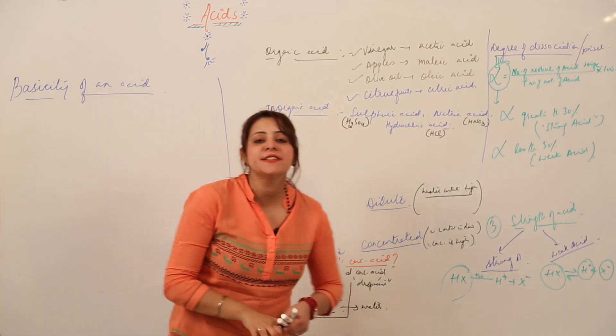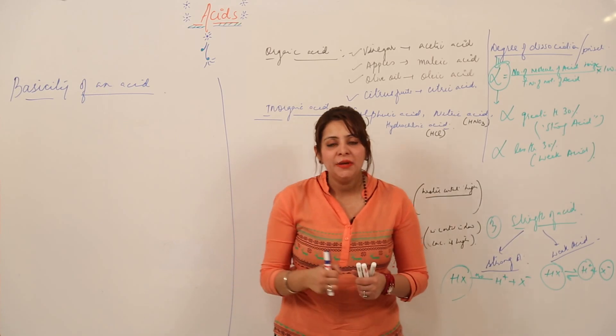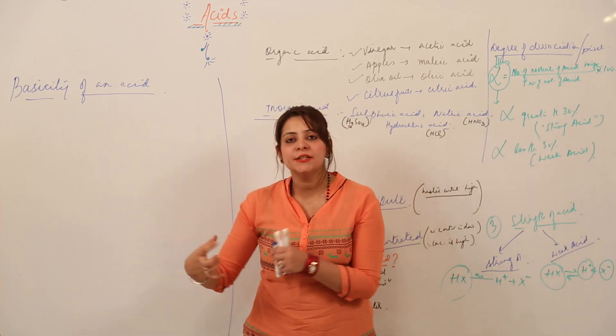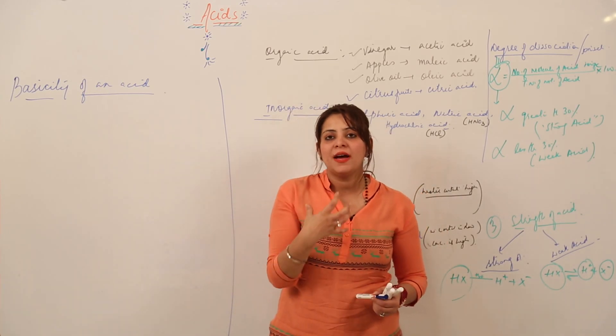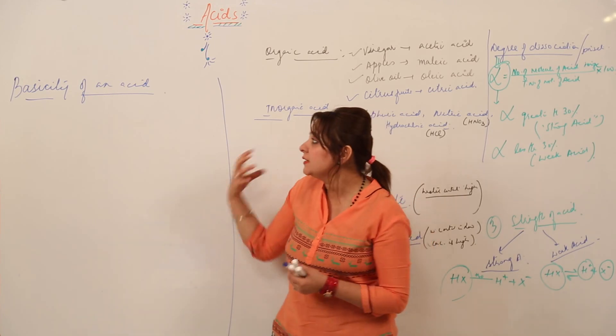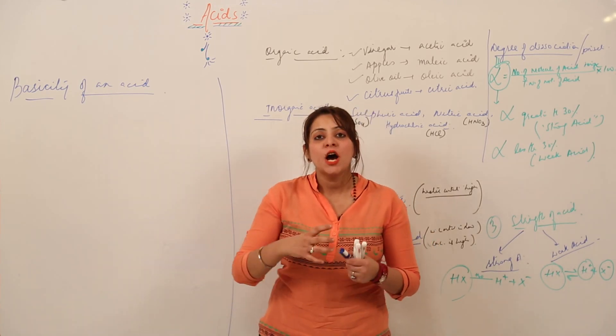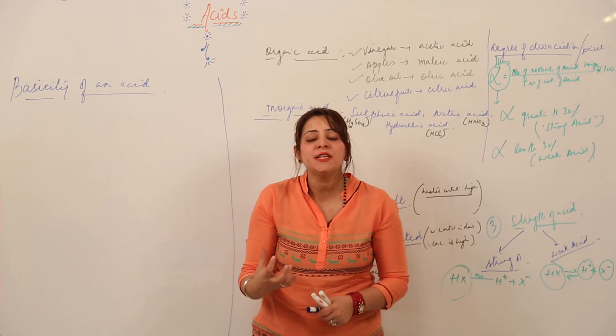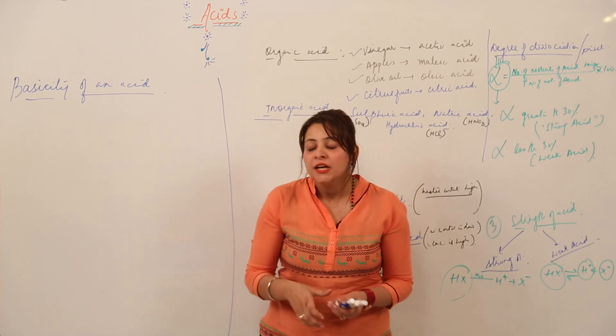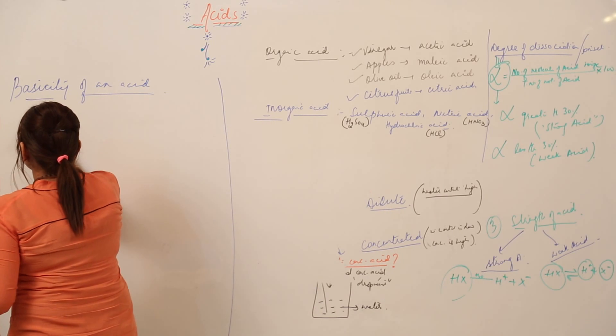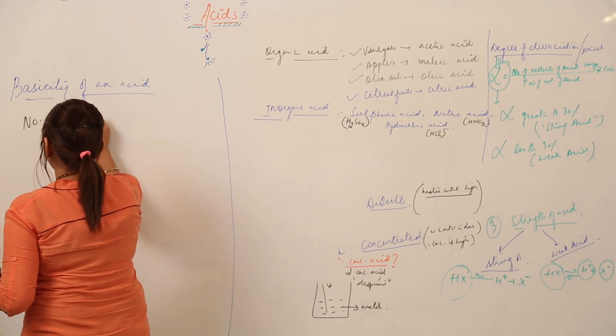Basicity of an acid means that when we add acid to water, we get hydrogen ions. Basicity of an acid indicates how many H ions we get when we add acid to the water. Basicity indicates the number of H ions produced when acid is added to water.